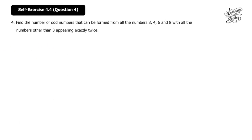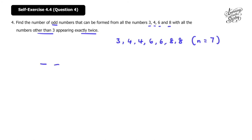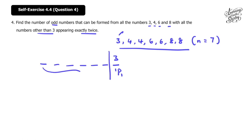Question 4: find the number of odd numbers that can be formed from all the digits 3, 4, 6, and 8, with all numbers other than 3 appearing exactly twice. So we have 7 digits: 3, 4, 4, 6, 6, 8, 8. To form odd numbers, the last digit must be odd. The only odd digit is 3, so there is 1 way (P1) to place it at the end. The remaining 6 digits — with repeats of two 4's, two 6's, and two 8's — give 6 factorial over 2 factorial times 2 factorial times 2 factorial, multiplied by 1, giving 90 ways.